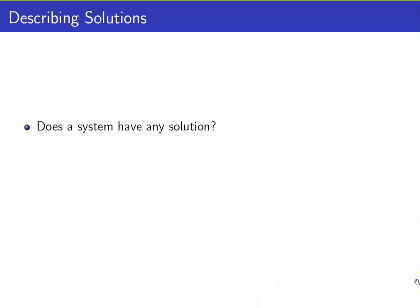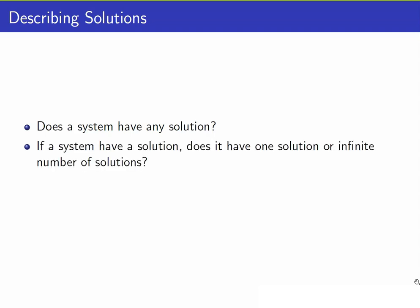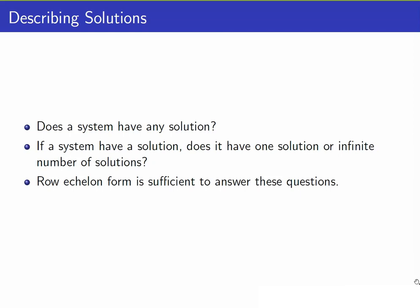Sometimes, if we are given a system, we do not necessarily want the solutions to the system. We just want to know: does it have a solution in the first place? And if so, does it have one solution or an infinite number of solutions? It turns out that the row echelon form of the augmented matrix will be sufficient to answer these questions.